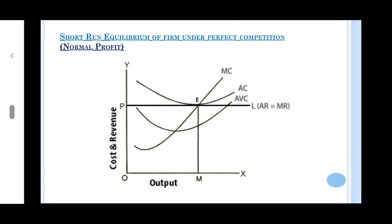Average revenue is equal to average cost. AR at ME and average cost is also at ME. So average revenue is equal to average cost. It means that firms are earning normal profit. And the price is OP, this is the equilibrium price. Equilibrium output is OM.